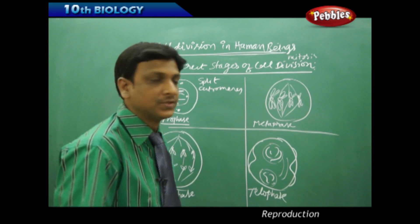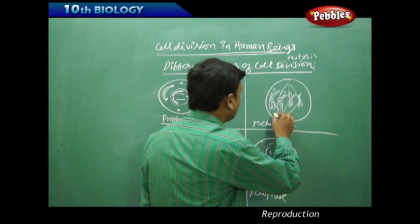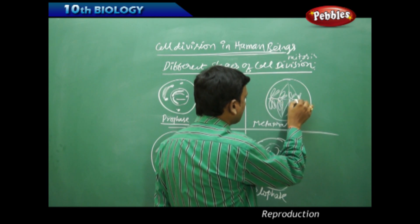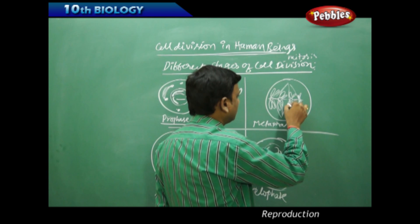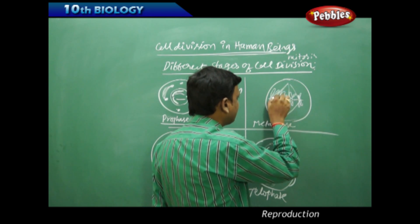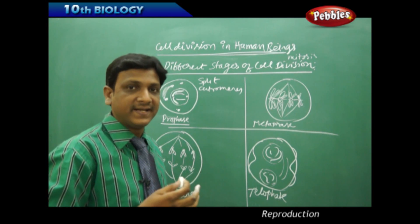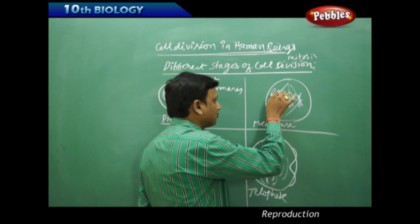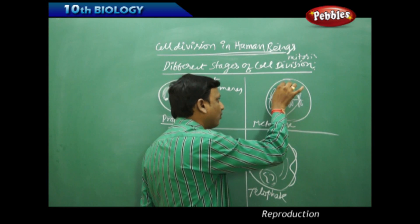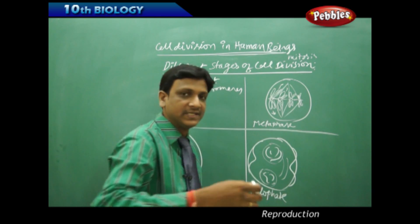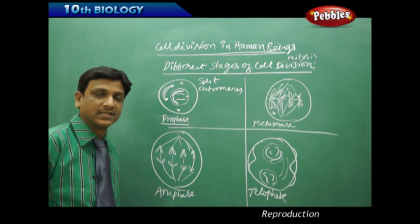In metaphase, these centromeres come to the axis of the spindle. The spindle fibers pull the centromeres, which start dividing these chromosomes. This set, this pair, will go in this direction, and this pair will go in that direction. This pulling starts in metaphase.